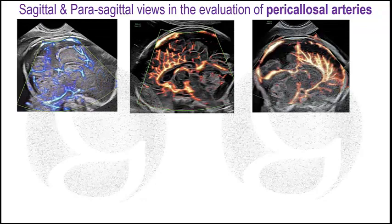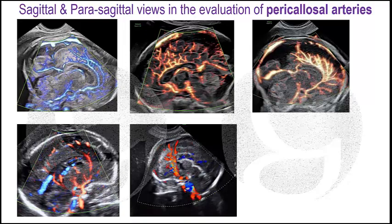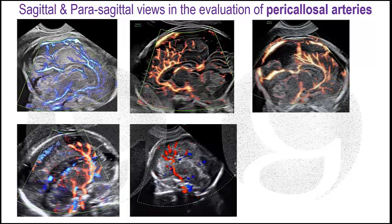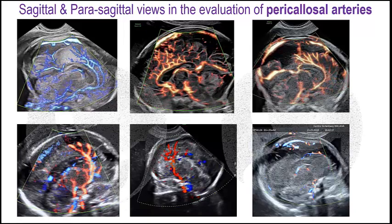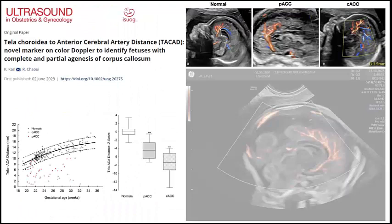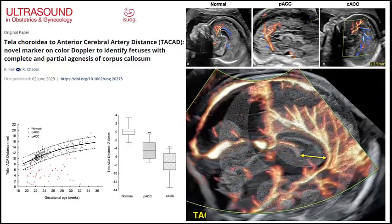We also need the sagittal views to confirm the normal path of the pericallosal arteries close to the corpus callosum. In cases of partial or complete agenesis of the corpus callosum, we will see an abnormal branching and course of these arteries. We may also see an anterior displacement of the anterior cerebral artery, giving us the 'snake under the skull' sign, which is very suggestive of alobar prosencephaly. Recently, Chaoui and colleagues described the evaluation in the sagittal view of the telachoroidea-to-anterior cerebral artery distance as a useful marker to identify fetuses with corpus callosum agenesis.